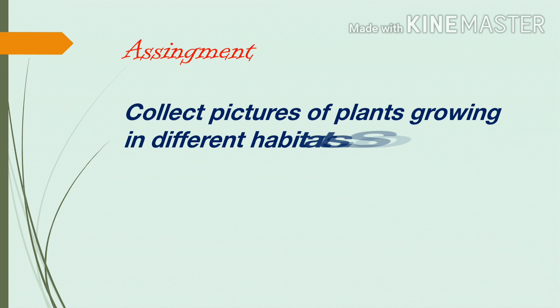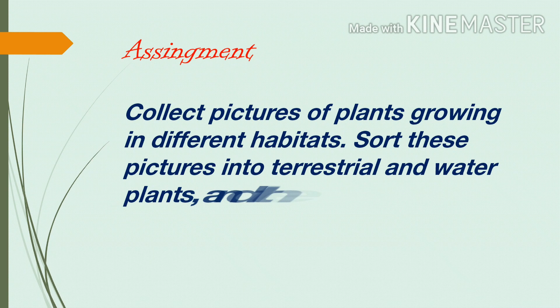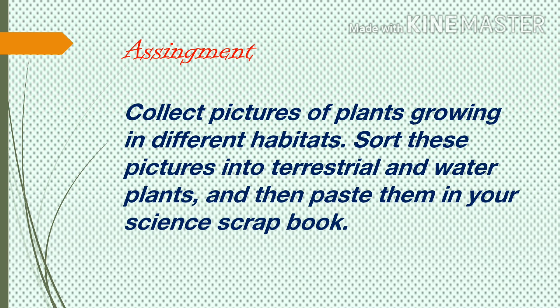Assignment. Students, please do this assignment in your scrapbook. Collect pictures of plants growing in different habitats, sort them into terrestrial and water plants, and paste them in your science scrapbook. You can cover different types of habitats: desert plants (write one example and paste one picture), forest plants — including low rainfall and heavy rainfall areas — as well as grassland, mountain region, ocean region, and wetlands (plants found in the swamp region). Please complete this assignment — it will be quite interesting to collect various pictures, write their names, and paste them in the scrapbook.